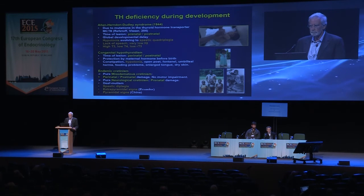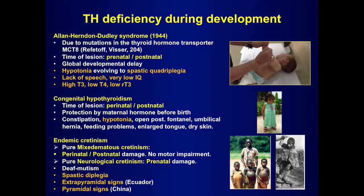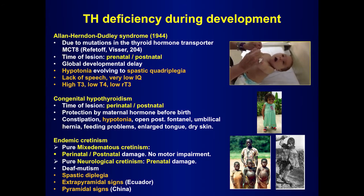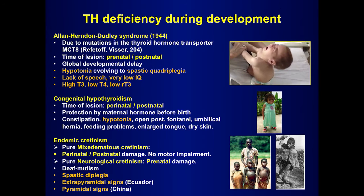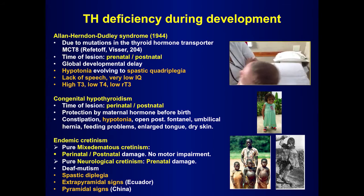This is the comparison between MCT8 mutations and congenital or endemic cretinism. The Allan-Herndon-Dudley syndrome, which is due to mutation in the thyroid hormone transporter, although it was described in 1944, it was not until 2004 that Refetoff and Visser described mutations in the gene encoding the transporter MCT8. This is probably the most serious condition related to thyroid hormone deficiency during development, and it appears early after birth, during the first few months of life.